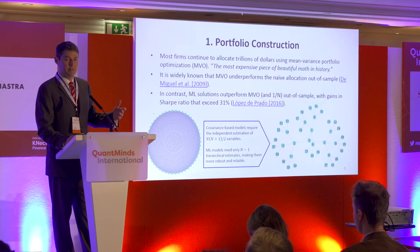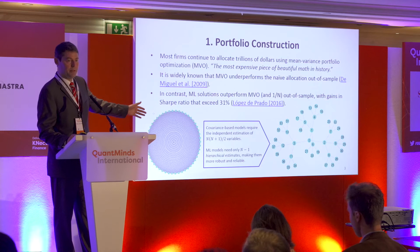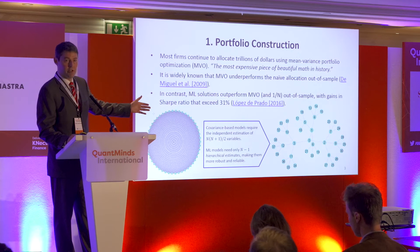A better way to do this is applying machine learning: you compute a minimum spanning tree that summarizes the structure of the data. Applying a tree structure allows you to identify hierarchical relationships between securities. The results are much more robust because instead of estimating n×(n+1)/2 independent variables, you need to estimate only n−1 relationships. You will require much less data to obtain a robust characterization of the market.